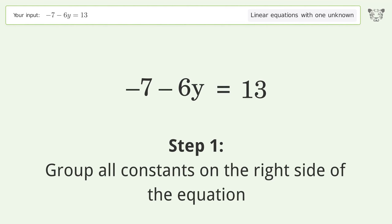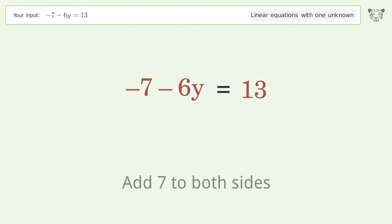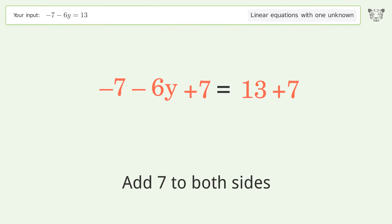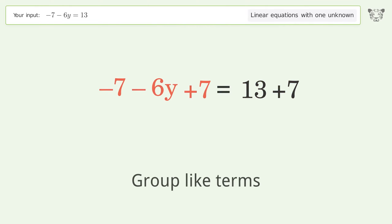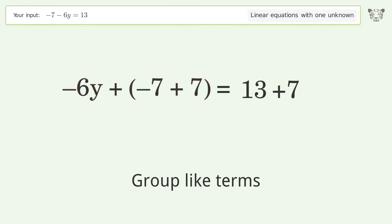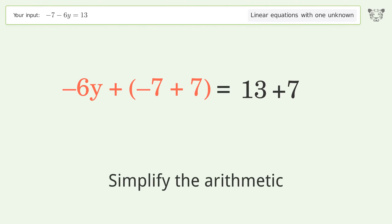Group all constants on the right side of the equation — add 7 to both sides. Then group like terms and simplify the arithmetic.